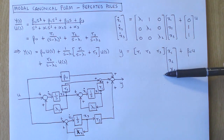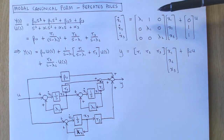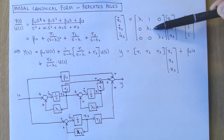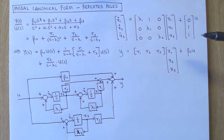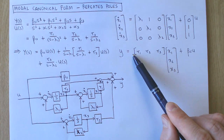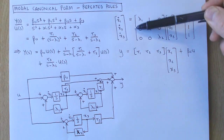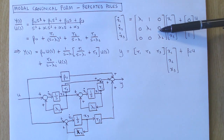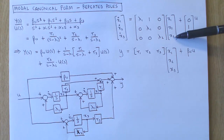In the state variable system, the poles of the system are on the diagonal of the A matrix, but one of the off-diagonal elements in the block corresponding to the repeated poles is 1. The vector b contains 0s and 1 for the elements corresponding to the repeated poles and 1s for the rest. The c vector contains the residuals and the scalar d is beta 0. The A matrix is again in block diagonal form, with the states corresponding to the repeated poles coupled with each other, but decoupled from all the other states.